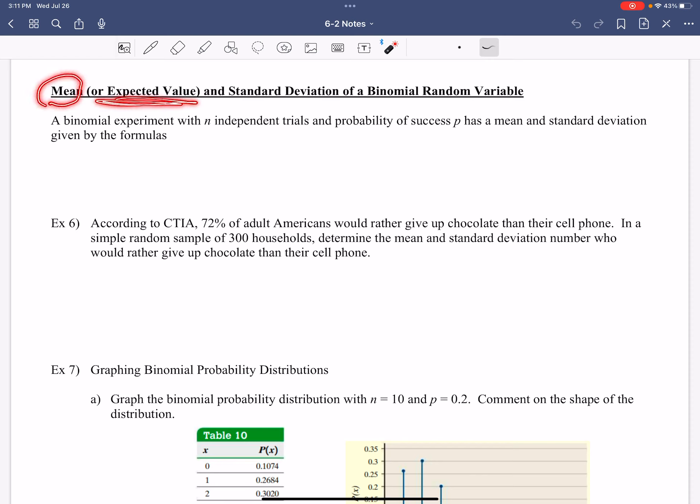Now we're using mean, and look at the words we're using again. Remember we already talked about that. Anytime you see expected or expected value, you're talking about the mean. So those are interchangeable. So now we are expanding our concept, and standard deviation of a binomial random variable.